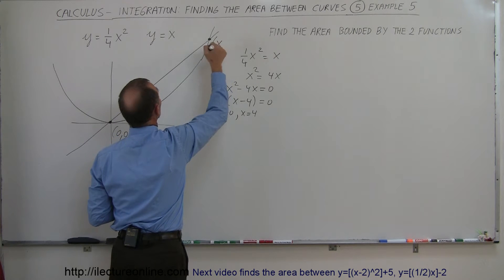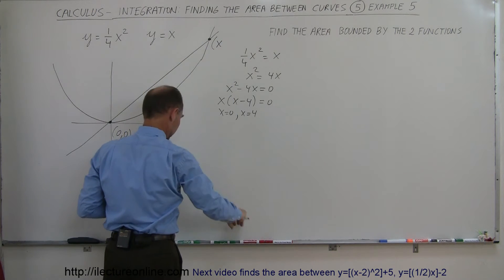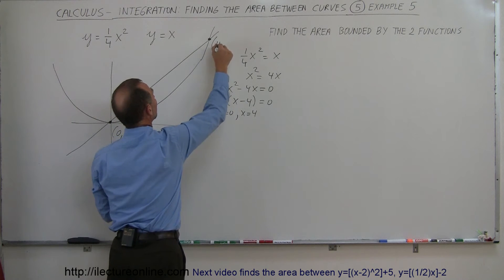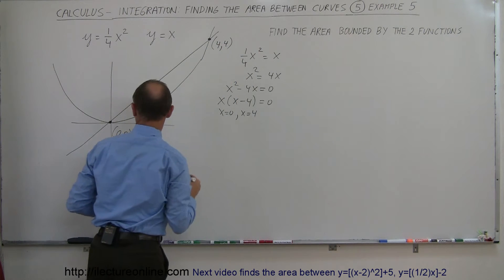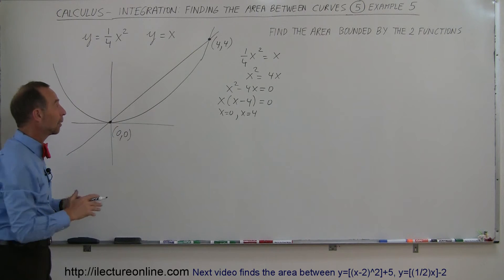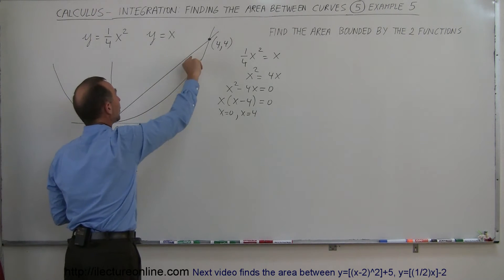So there's x equals 4, and since y equals x, that means y is equal to 4 as well. So the two lines cross at 0, 0 and at 4, 4, and what we're trying to do is find the area between these two.